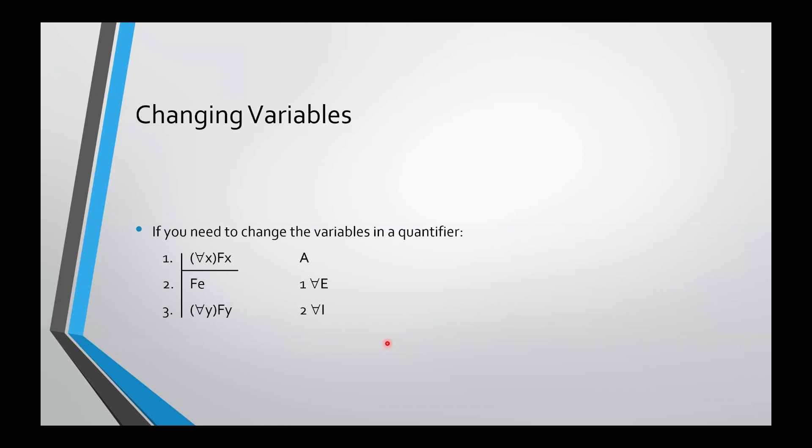So you need to know how to change variables in a quantifier. So to change the variables in a universal quantifier, you do universal elimination first, for a constant that is not found in any open assumptions. Remember that's crucial. And then you just do universal introduction. So it's just an easy two-step move to change the variables.